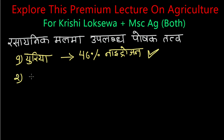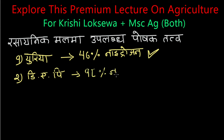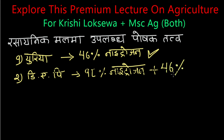Let's say that the next fertilizer is DAP. How many percent in DAP? DAP has 18% nitrogen, plus 46% phosphorus.